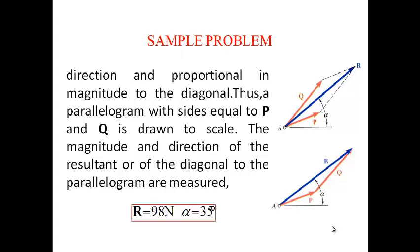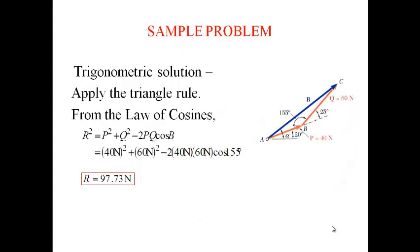Trigonometric solution. Applying a triangle rule from the law of cosines, R equals P squared plus Q squared minus 2PQ cos B. That is 40 N squared plus 60 N squared minus 2 times 40 N times 60 N cos 155 degrees, where the resultant is 97.73 N.